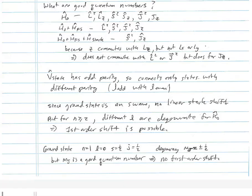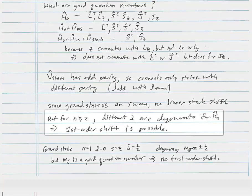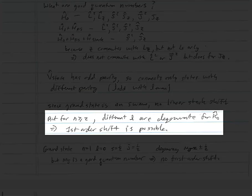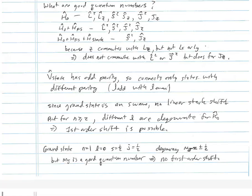Since the ground state is an s-wave, there's no linear Stark shift because the ground state can't connect to itself. But for n ≥ 2, different l values are degenerate, which means first-order shifts are possible — that's called the linear Stark effect. The ground state can have a quadratic shift, called the quadratic Stark effect, and we're going to discuss that next.